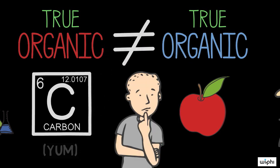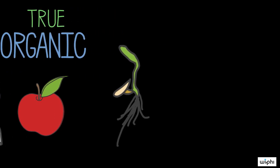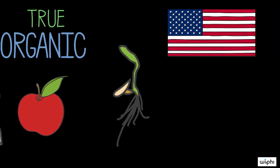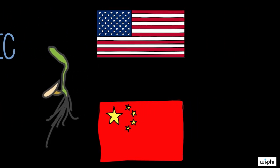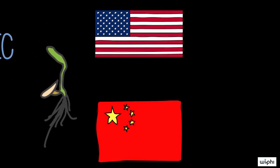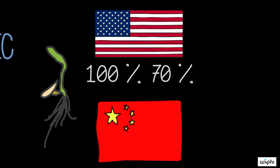It's worth noting that even if we limit the term 'organic' to its agricultural sense, the threat of equivocation still looms due to the ambiguity of the term. For instance, different countries have different standards for what counts as organic, and different foods adhere to different standards. In the United States, there are various categories for labeling organic products, ranging from a product made with 100% organic ingredients to a product made with at least 70% organic ingredients.